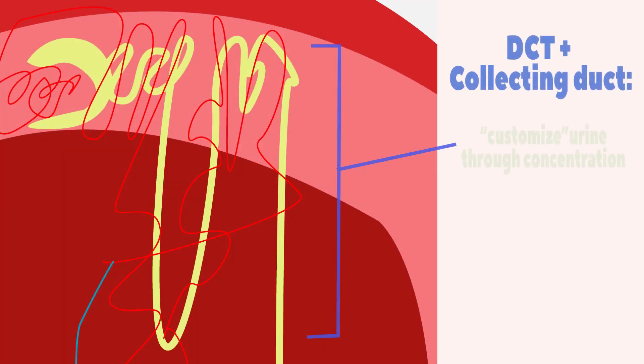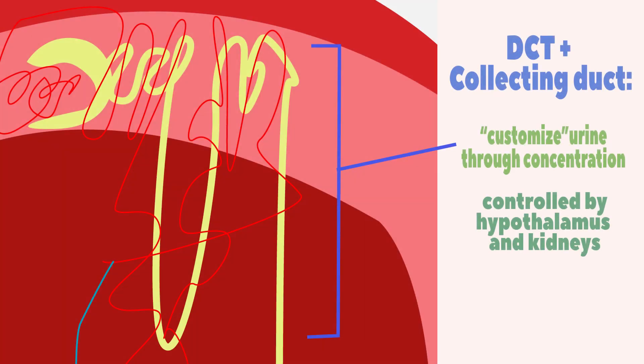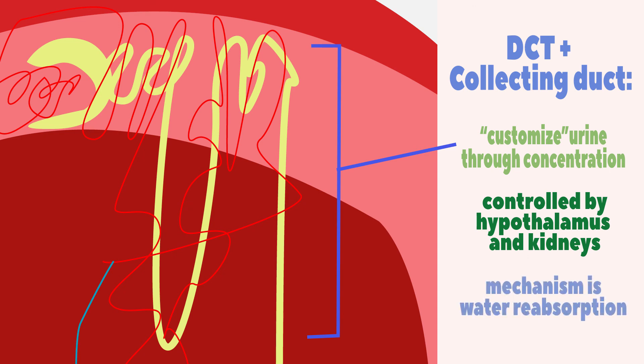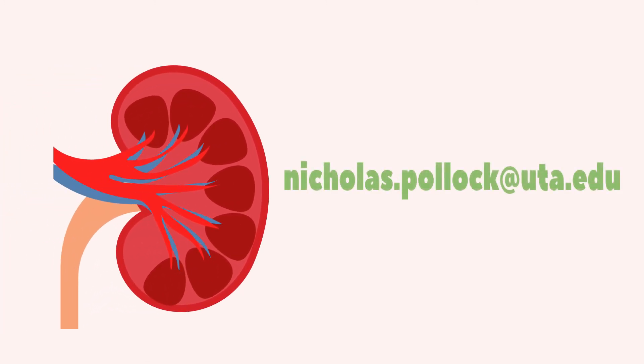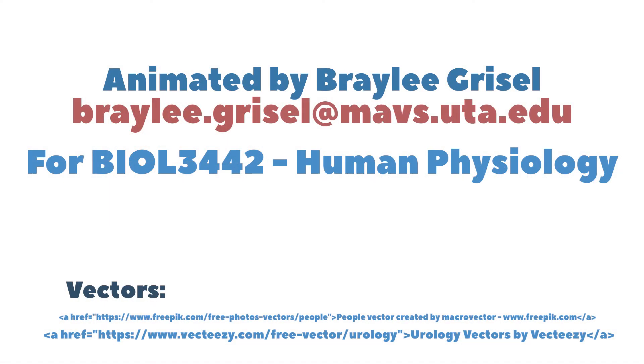Overall, you can think of the distal tubule and collecting duct of a nephron as the final customizer of urine. Your urine here can be made as concentrated or as dilute as instructed by the hypothalamus and the kidneys. Any further questions or points of clarification should be directed to Dr. Pollock during office hours or by appointment.